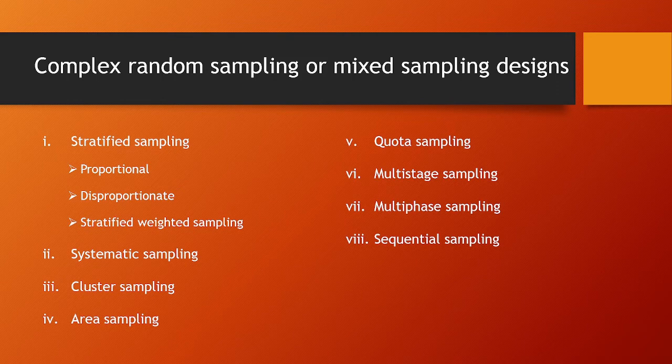If you have complete information, we can stop there — that is the first sequence. In the second sequence, if you have a little data, you can take a little more data, or if you have a different group, we can take another sequence. If you have complete information, we stop there. That is known as sequential sampling.